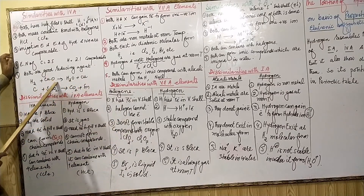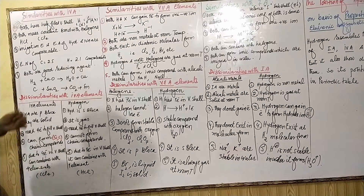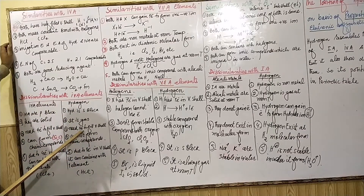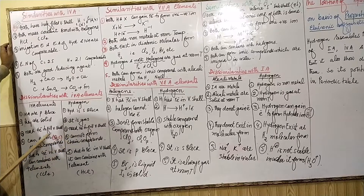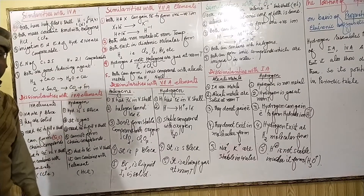An important similarity: both hydrogen and 4A elements are reducing agents — meaning they themselves get oxidized (addition of oxygen is oxidation) and reduce others. Carbon is a reducing agent; it oxidizes itself and reduces others. Now the dissimilarities with 4A: 4A is p-block, hydrogen is s-block; 4A elements are solid while hydrogen is a gas. 4A elements have four valence electrons and can form long chain compounds — carbon and silicon have the ability to form long chains — but hydrogen has only one electron, so it can bond with only one atom and cannot form chain compounds.